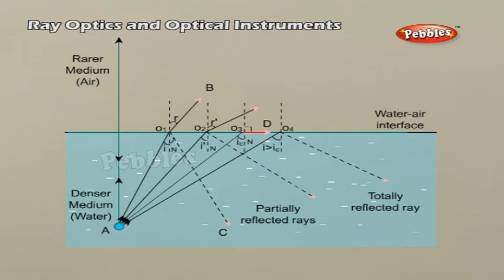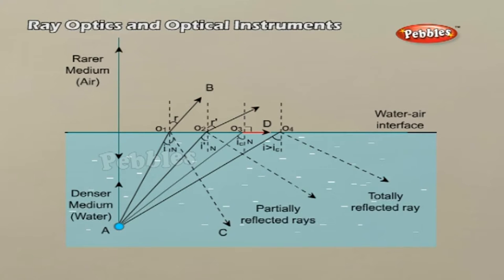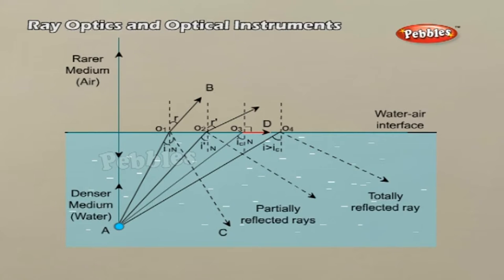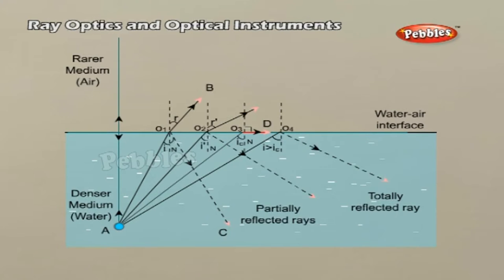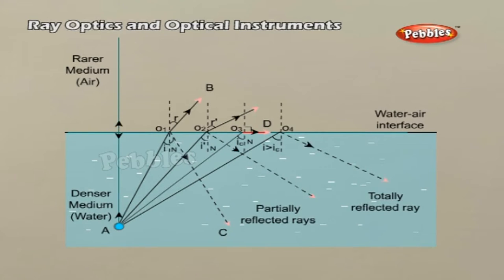For the ray AO₃, the angle of refraction is π/2. The refracted ray is bent so much away from the normal that it grazes the surface at the interface between the two media, as shown by the ray AO₃D in the figure. If the angle of incidence is increased still further — for example, the ray AO₄ — refraction is not possible and the incident ray is totally reflected. This is called total internal reflection.